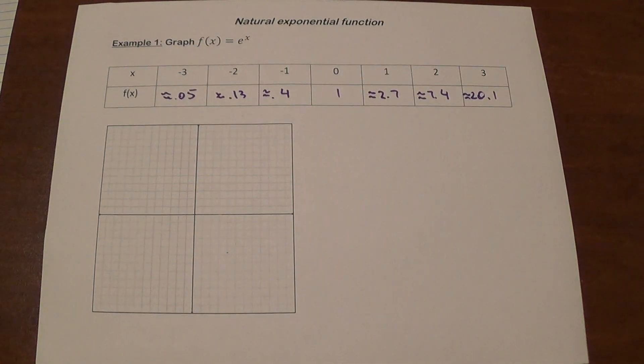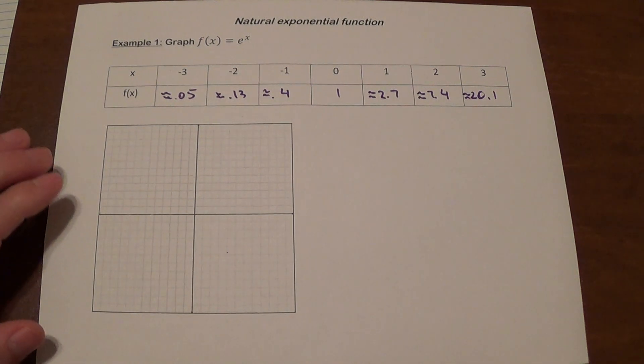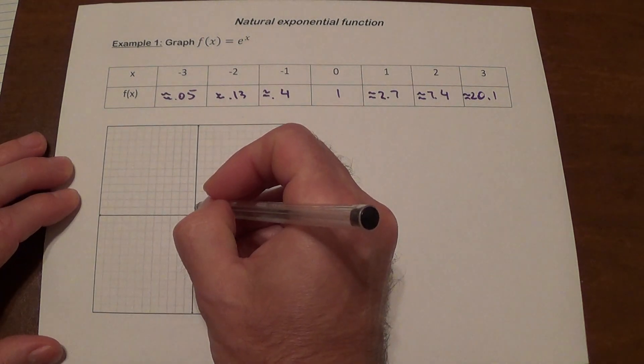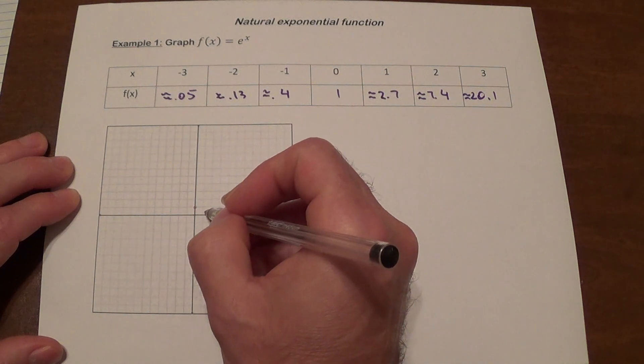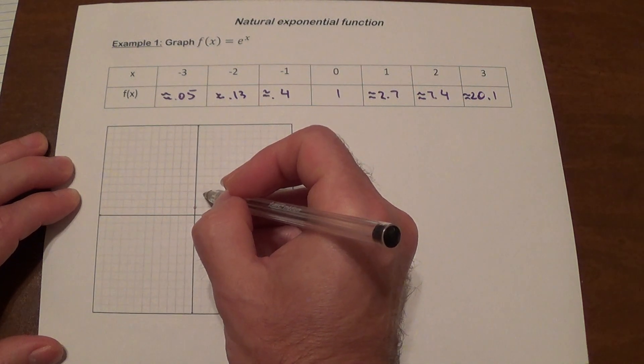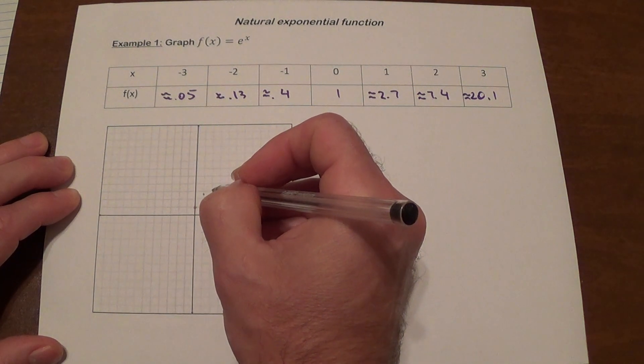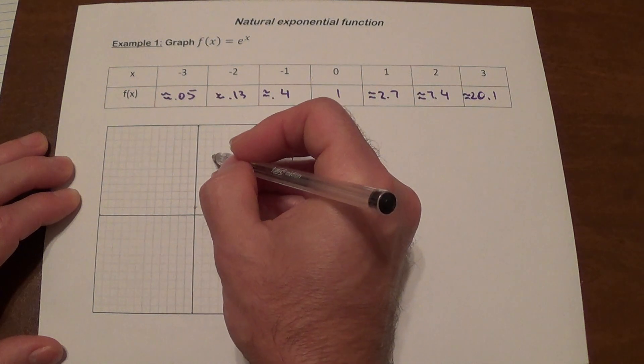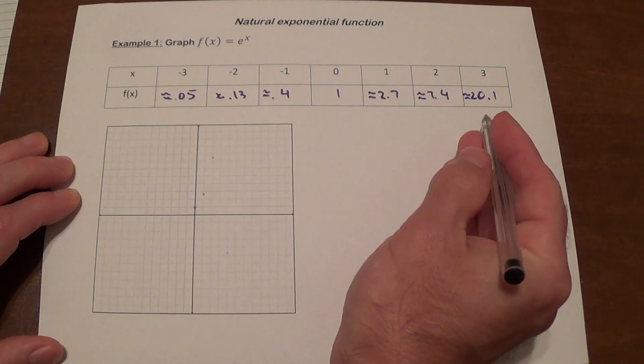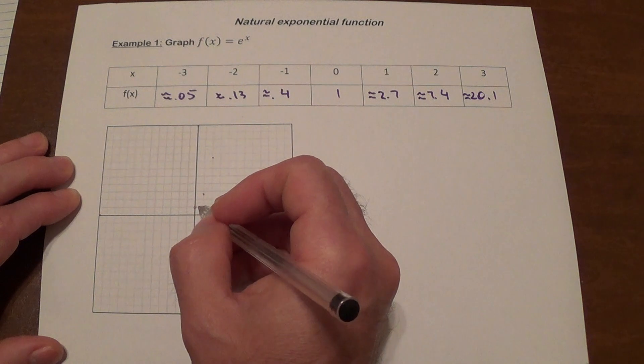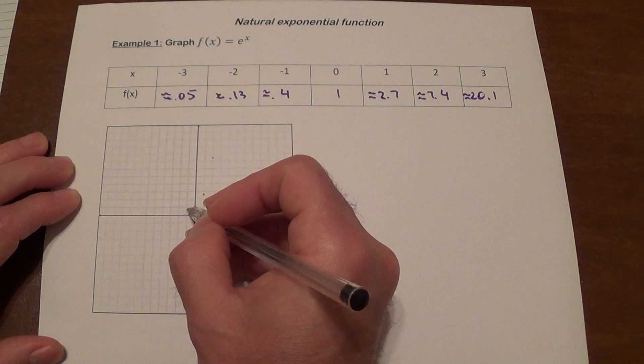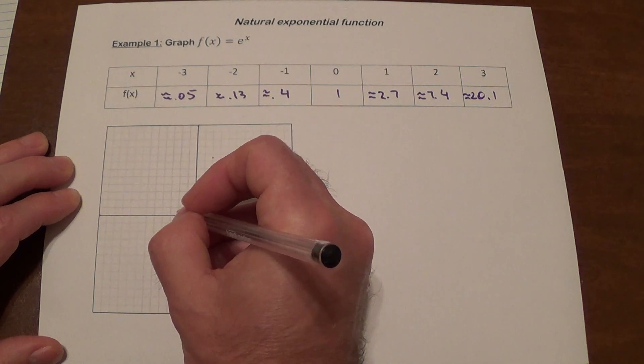We'll just plot the points. So 0, 1; 1, 2.7; 2, 7; negative 1, 0.4. We don't have enough room for that one. Over here it's approximately 0.4, 0.13.